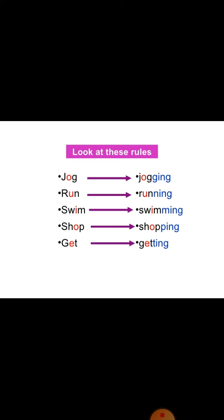Look at these rules. When a verb ends in a short vowel plus consonant, we double the consonant before adding ing. Jog becomes jogging — double g. Run becomes running — double n. Swim becomes swimming — double m. Shop becomes shopping — double p. Get becomes getting — double t.